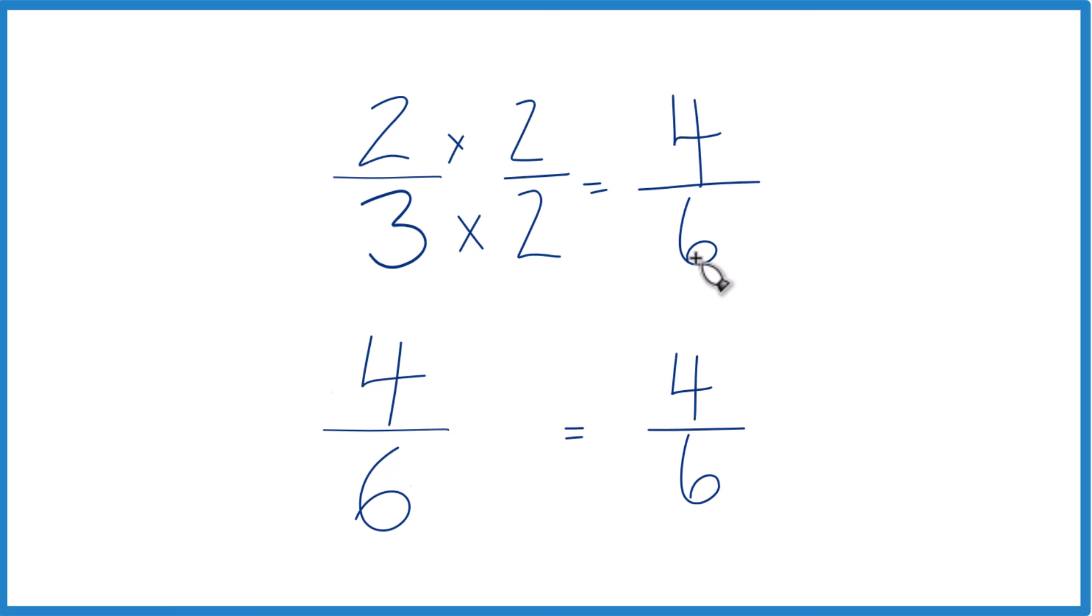And four-sixths, that's the same as two-thirds. And now we can see that we have four-sixths here and four-sixths here. They're equal. So two-thirds, that's equal to four-sixths. They're just equivalent fractions.